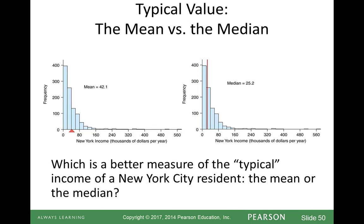What would be typical — the mean or the median? The mean is $42,000 but the median is $25,000. The mean overestimates a typical value because it is pulled toward the tail. The mean is not a resistant measure — it is influenced by extreme values. The median, however, is resistant because it is less affected by extreme values.